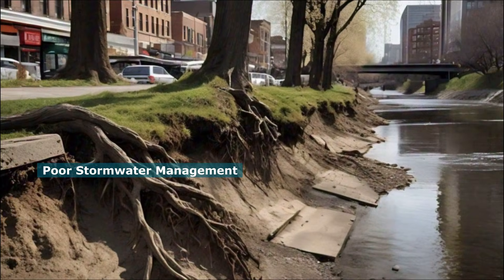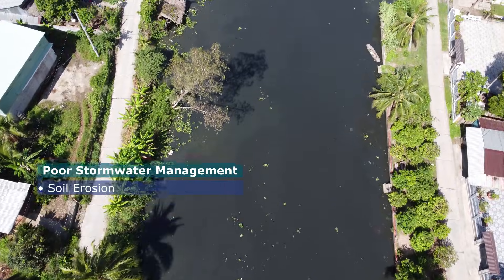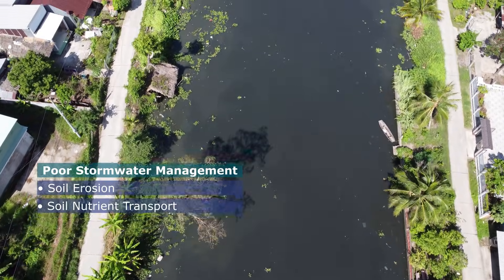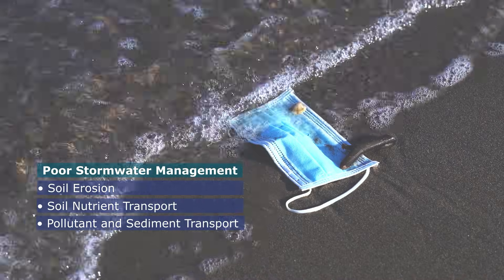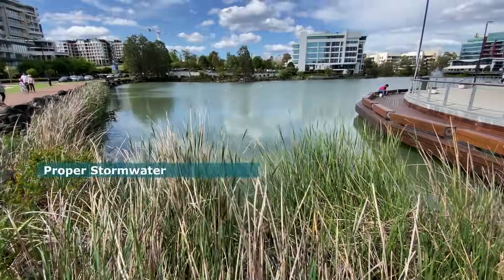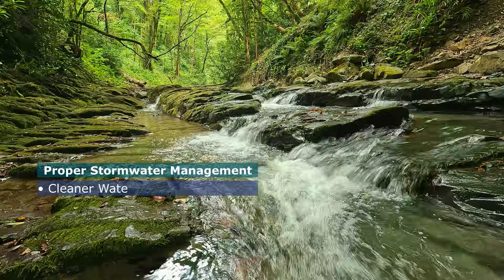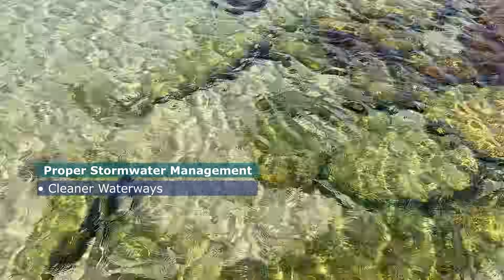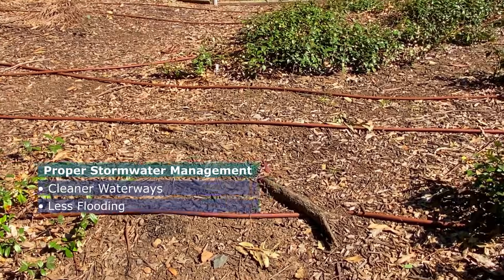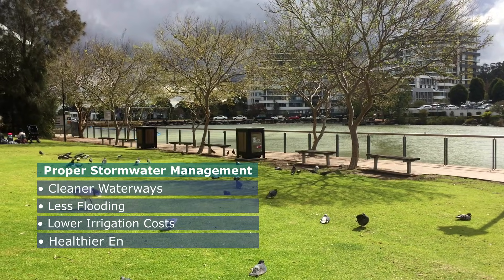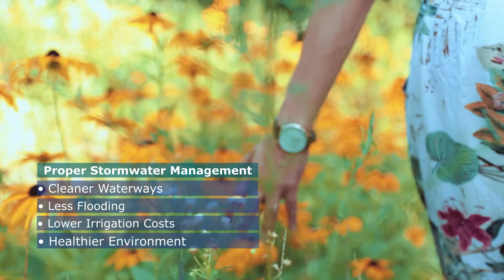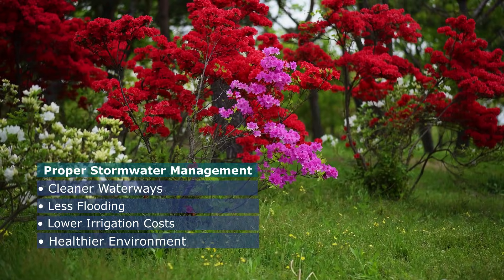Poor stormwater management not only causes problems such as soil erosion, but also washes away valuable soil nutrients and carries chemical pollutants, litter and sediments into the surrounding environment and downstream waterways. But as a result of proper stormwater management, rivers, lakes and coastlines remain clean and healthy, floods are significantly reduced, municipalities spend less on irrigation, and ultimately a healthier environment is created for people, plants and animals.